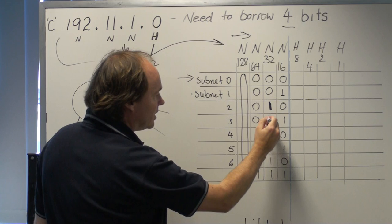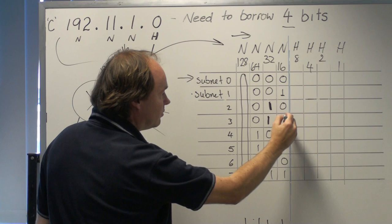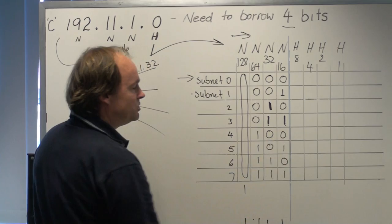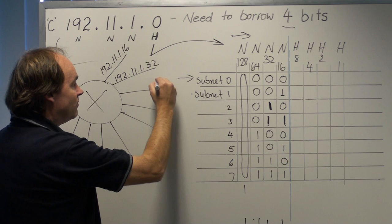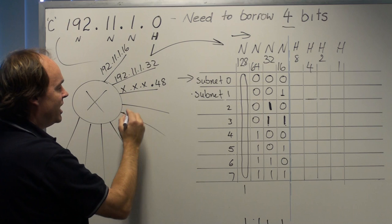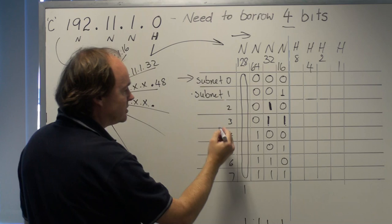And you'll notice that to find the third usable subnet, if we weren't allowed to use subnet zero, we find there's a one in this position and a one in this position, falling under 16 and falling under 32, so we see that it's 48. I might just use X, X, X to indicate they're not changing those numbers. 192.11.1 doesn't change, it's only the last octet in this structure.